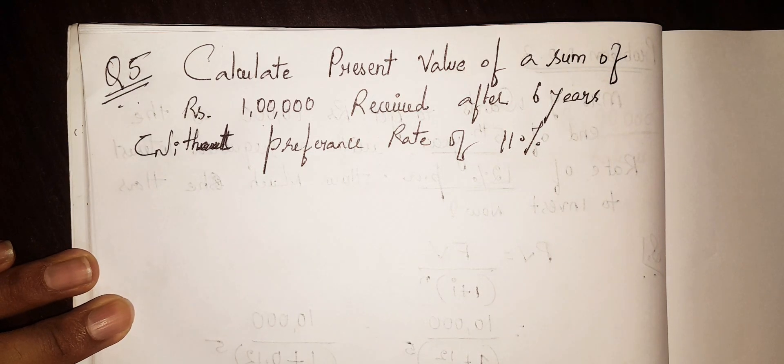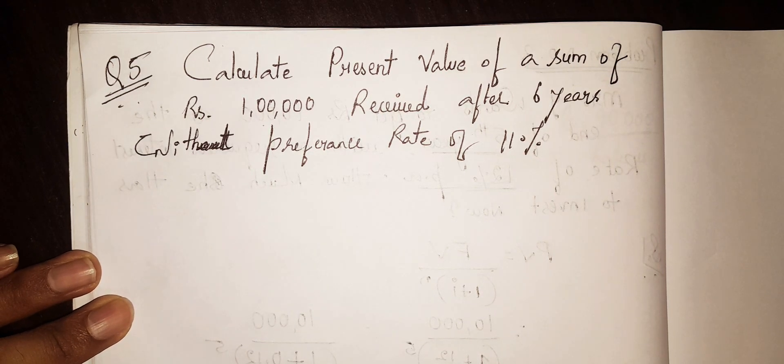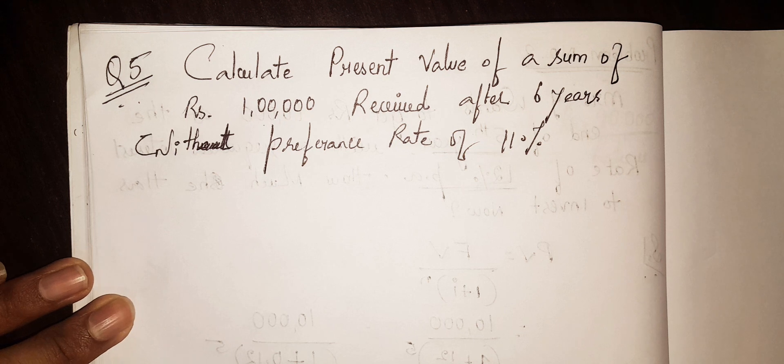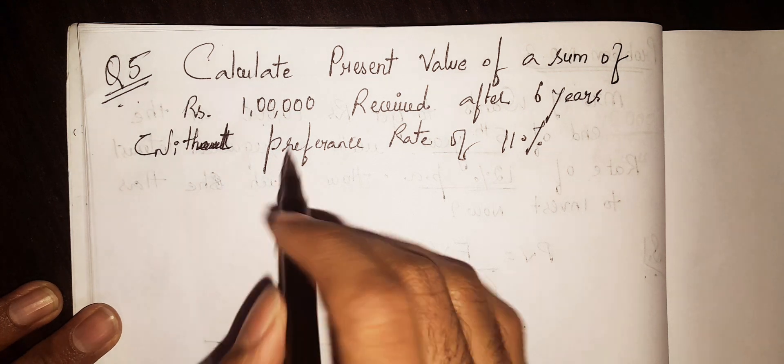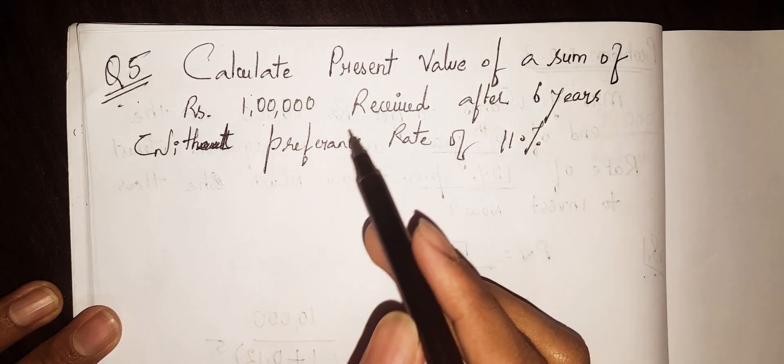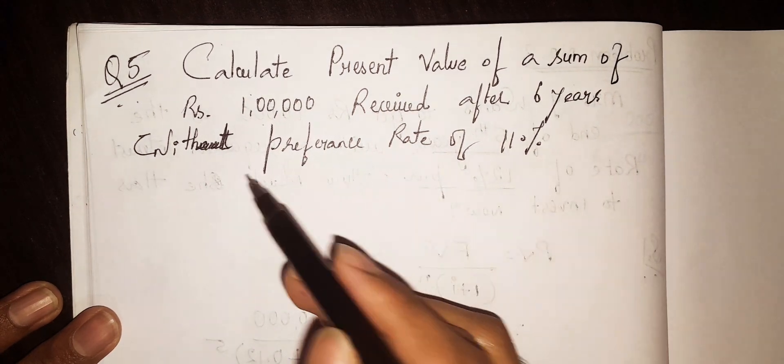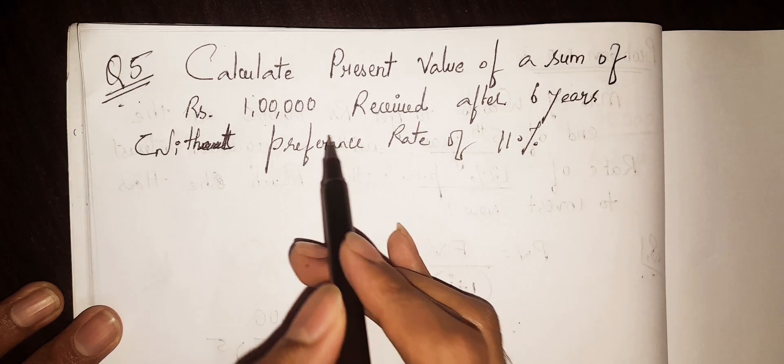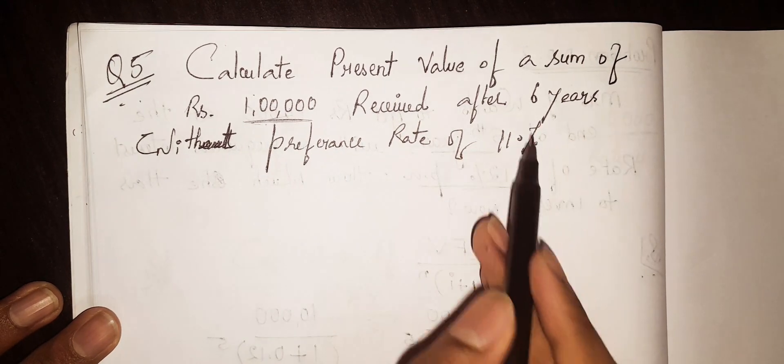Hello everyone, welcome to my YouTube channel. In this particular video, let us solve one more problem related to present value. Calculate present value of a sum of Rs. 1 lakh received after 6 years with a preference rate of 11%.